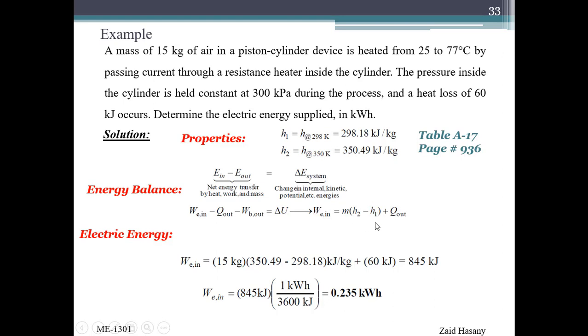The electric energy supplied equals the enthalpy change plus the amount of energy lost. From table A-17, you already got H2 and H1, replace the values, add 60 kJ, and you get 845 kilojoules. Since we usually express electric supply in kilowatt hours, simply divide by 3600 to get 0.235 kWh.